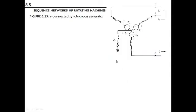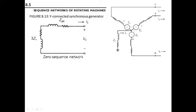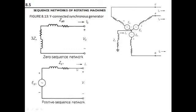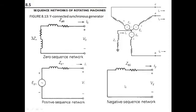So if we have some Y-connected synchronous machine, we can solve its network by having a zero sequence network with zero sequence impedance plus 3·Zn, similarly a positive sequence network, and similarly a negative sequence network.